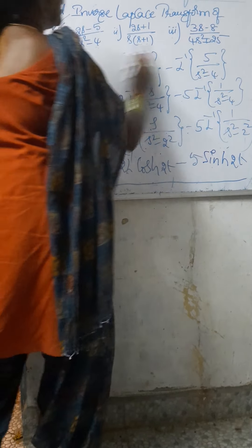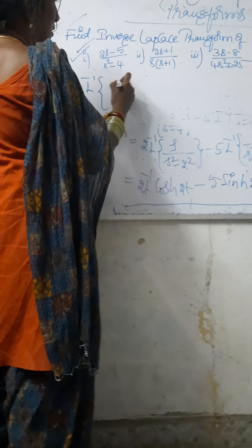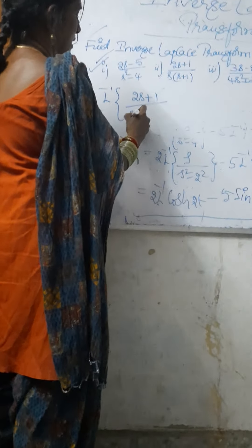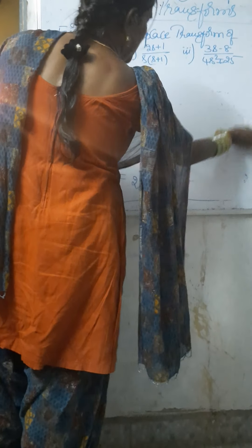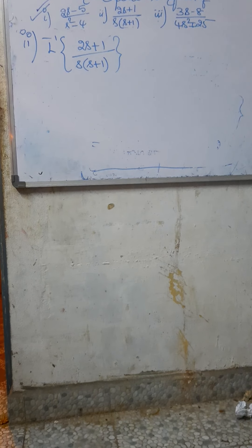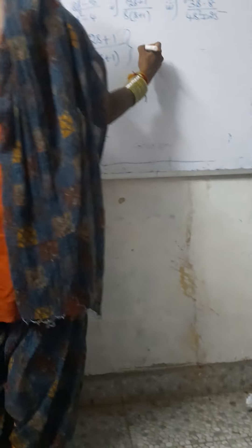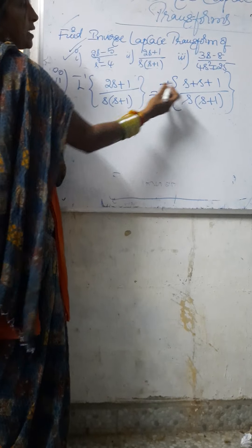Next, we have to find the second problem: inverse Laplace Transform of (2s plus 1) by s(s plus 1). Now solving this problem, we note that 2s can be written as s plus s.